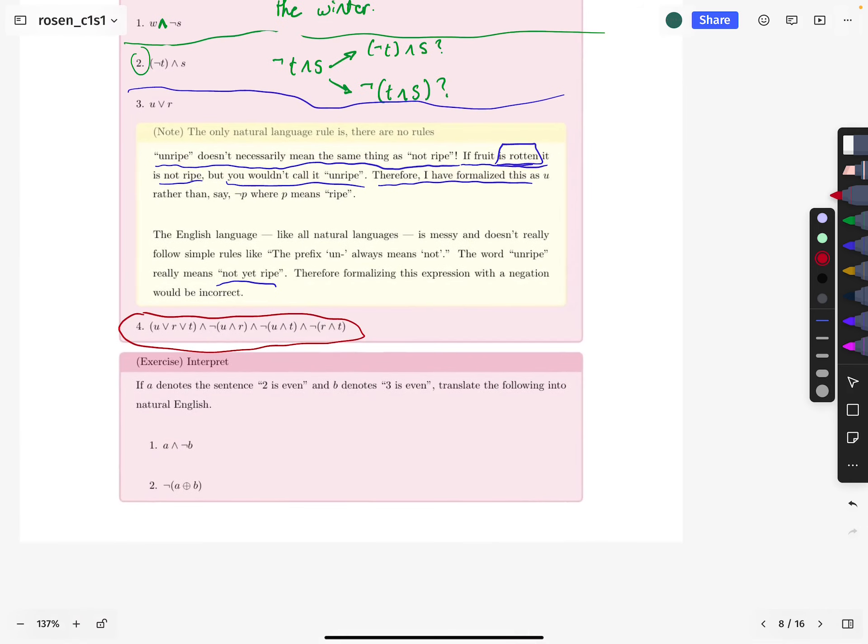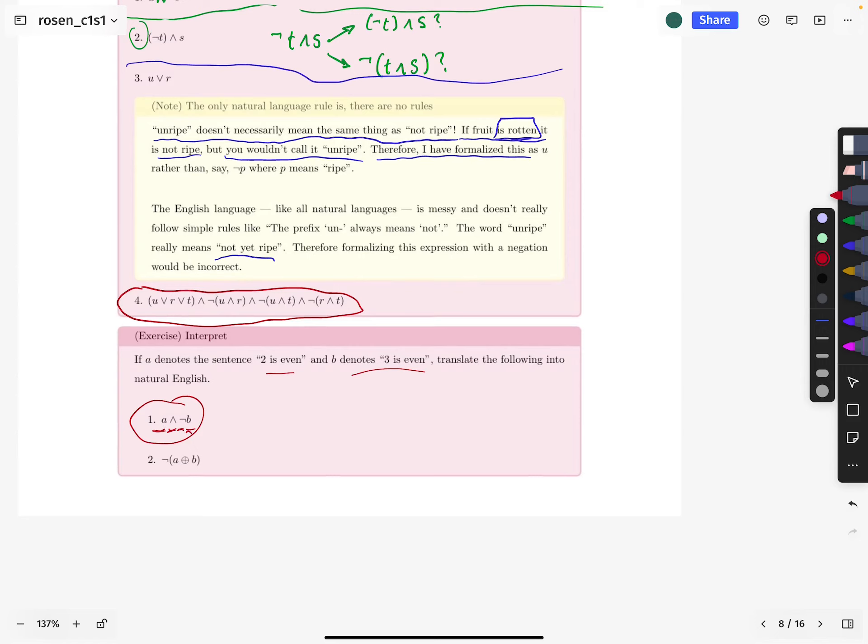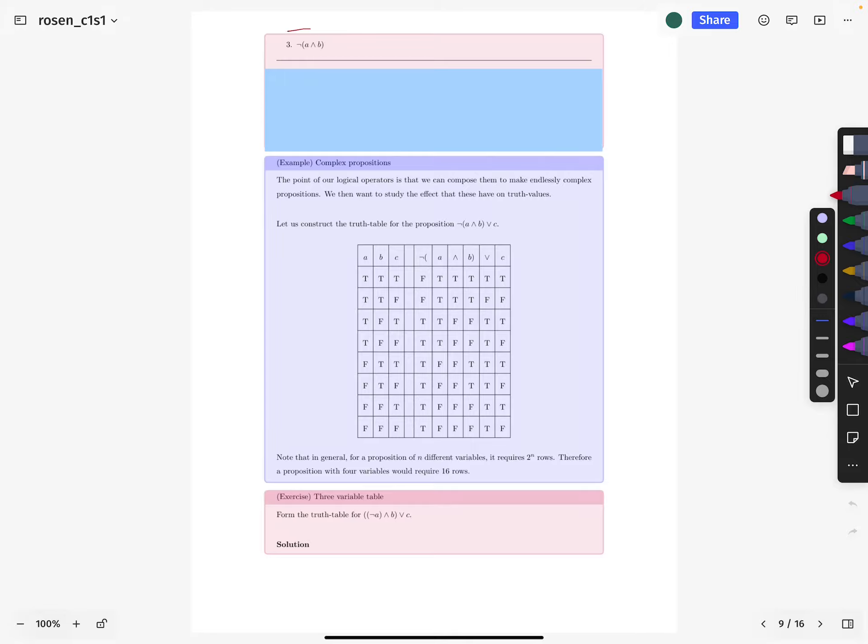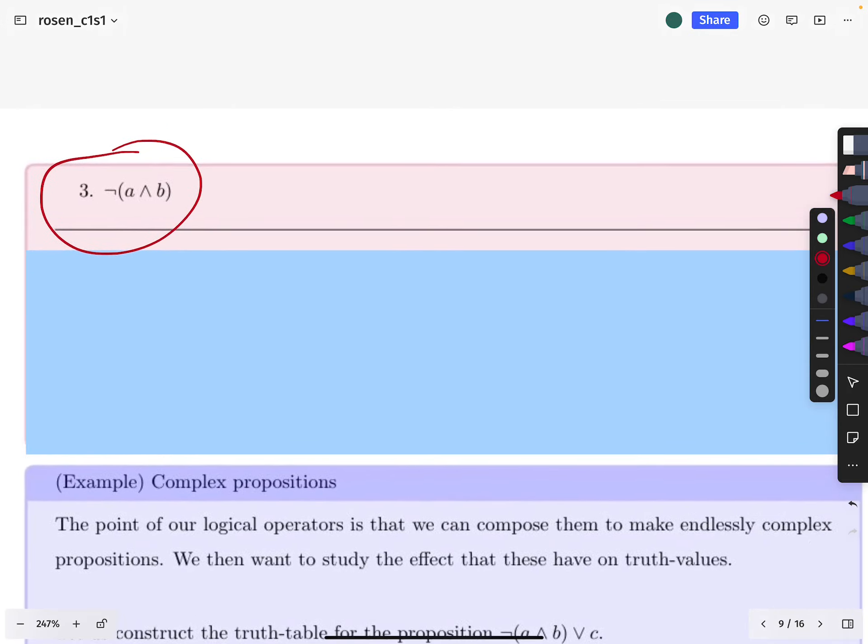Okay. Let's move straight into another exercise. So if A denotes the sentence two is even and B denotes three is even, then translate the following into natural English, right? So this is three is even conjunction negation. Or sorry, two is even conjunction negation. Three is even. And so, but I just said that in a very sort of like one-to-one translation. Your job in this exercise is to translate the same thing, but do it so that the resulting English sentence is much more natural than that. And so we have this one as well, two, the negation of the XOR. And come over here. And we have also that three is the negation of the conjunction. Okay. And the solution in the next video.